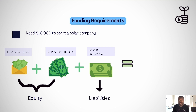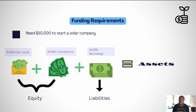Now he has the $10,000 he needs for the business, which is $5,000 in equity plus $5,000 in liabilities. This total amount is currently in cash and represents the assets of the business. Assets can be in cash or other forms. For example, if he decided to use $2,000 to buy machinery, then his assets will be $8,000 in cash and $2,000 in machinery.